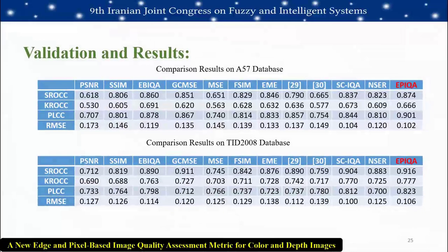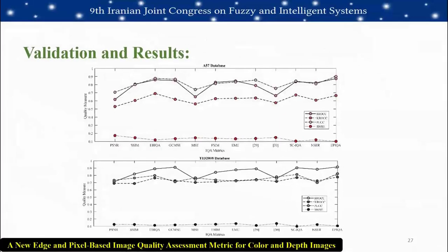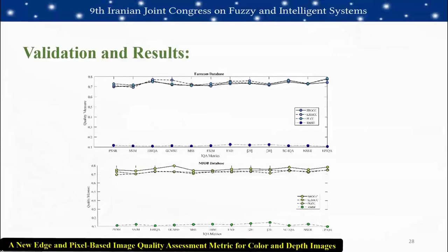The results for different metrics and validation methods are presented. The proposed approach EPIQA is shown on the far right column in red, with database names at the top of the table. Results are also shown visually in graph form, with color data and depth data presented separately.